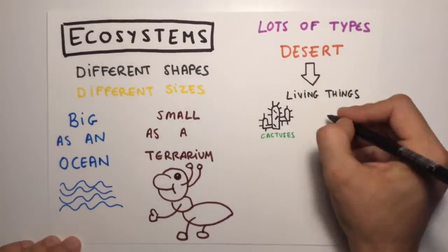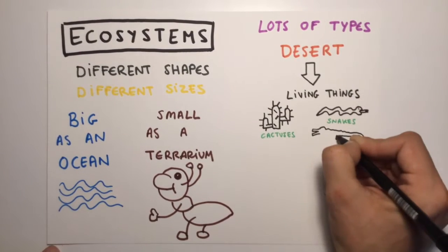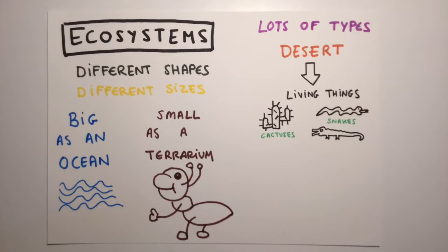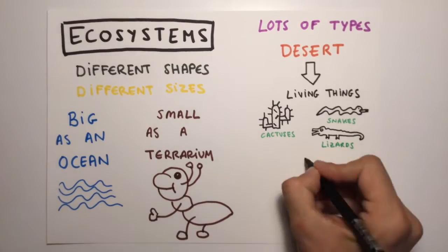There are lots of types. For example, a desert is an ecosystem that consists of all the living things that live there, like camels, lizards, snakes, and cactuses.